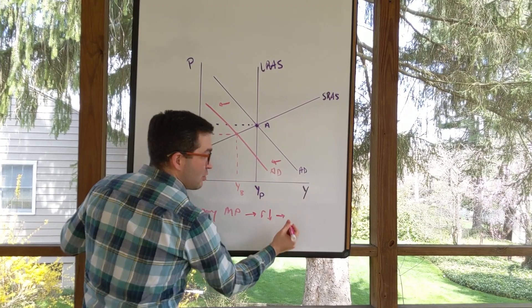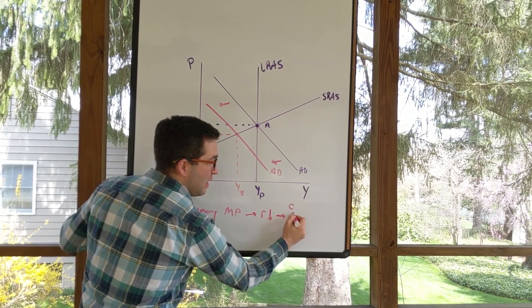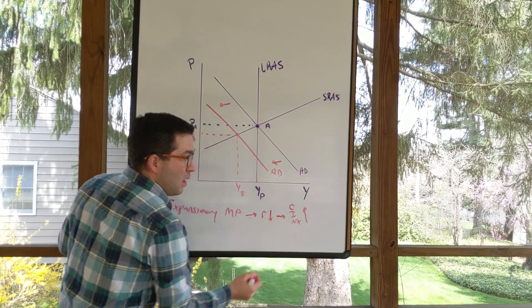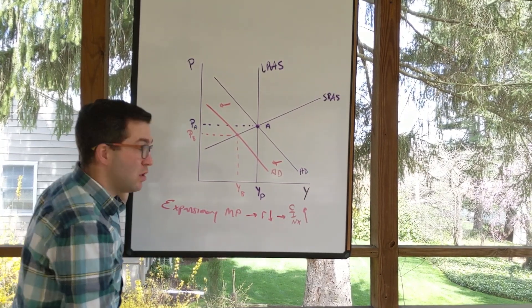Those decreases in interest rates are going to make consumption, investment, and net exports all increase. And we know an increase in consumption, investment, and net exports is going to lead to that aggregate demand curve shifting to the right.